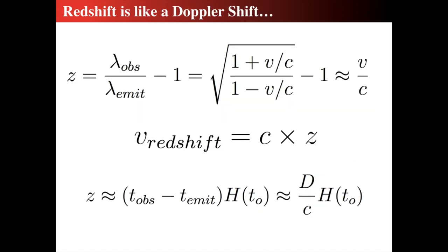We can summarize: the speed of the redshift, v_redshift, is equal to the speed of light c times the redshift value z. At the top we see the full relationship — if you're looking at it relativistically, meaning the recession velocity is nearly the speed of light, you must use the square-root equation.